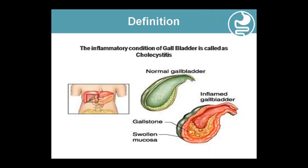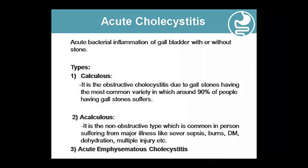The gallbladder, when inflamed, appears swollen. There are two types: acute and chronic. Cholecystitis can be calculous — obstructive type caused by gallstones — or acalculous — non-obstructive type. It can also be emphysematous cholecystitis, which involves bacterial infection.